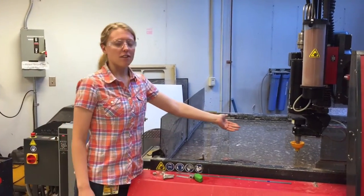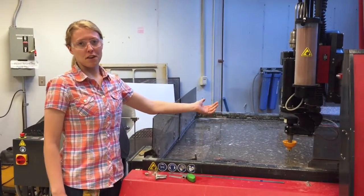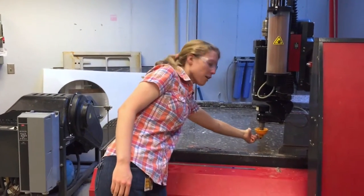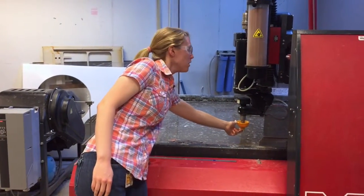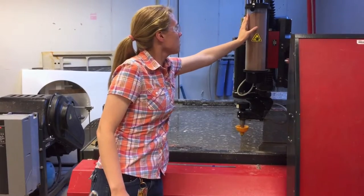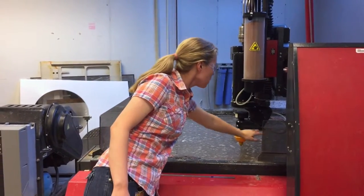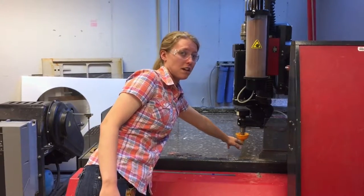The water jet cutter uses a stream of highly pressurized water and abrasive garnet which gets blasted out through this very small opening in the nozzle. The garnet is pulled from this hopper through this tube and is mixed in with the water to help with cutting.